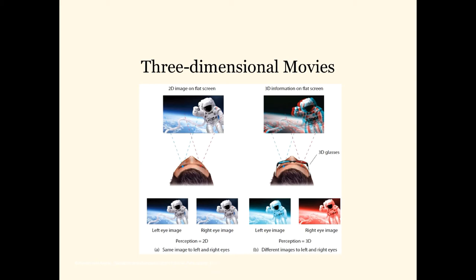This can be used to create 3D movies. On a regular two-dimensional movie on a flat screen, there's just one image. But when they make a 3D movie, they actually make it so that there are two images superimposed. There's a red one and a blue one — the red one is slightly to the left, the blue one is slightly to the right. The red image is received by the right eye because you're wearing red and blue glasses, and the blue image is sent to the left eye. The glasses make sure each eye only gets one of the images, and that allows our brains to create a three-dimensional image out of a two-dimensional scene.